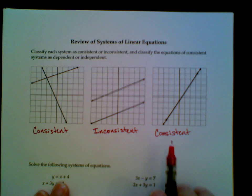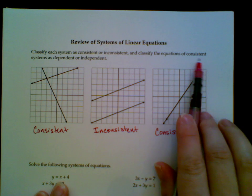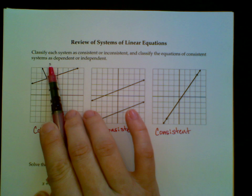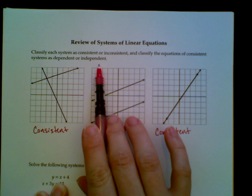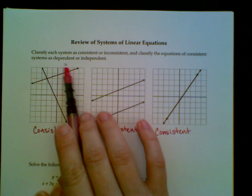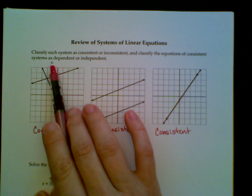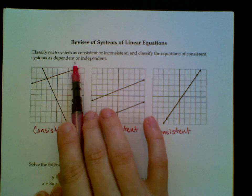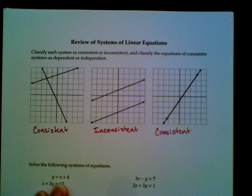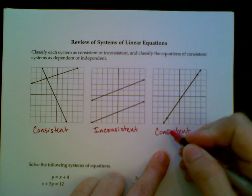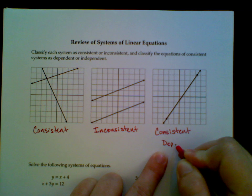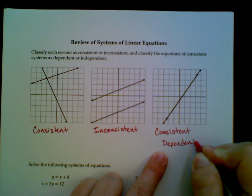Now it asks me to classify the equations of consistent systems as dependent or independent. Remember, dependent means that the equations have the same graph. Two equations are dependent if they have the same graph, which is obviously this situation over here. This one is consistent and dependent.